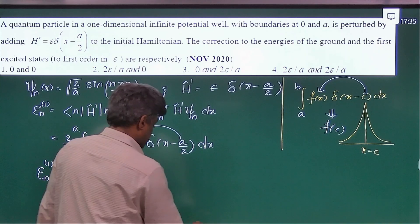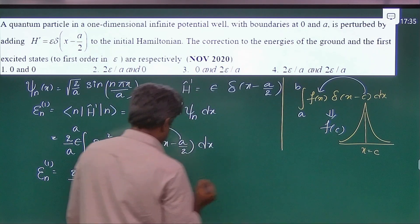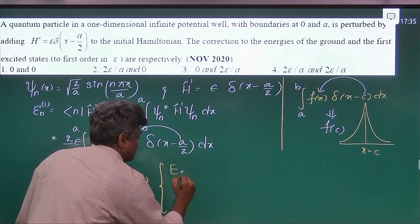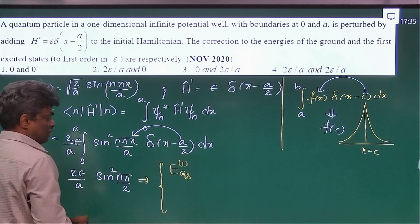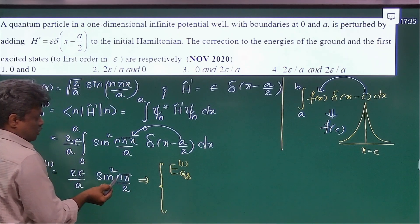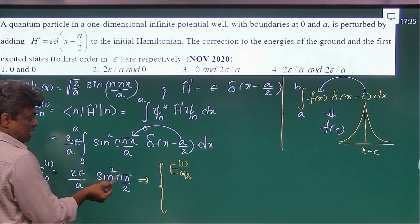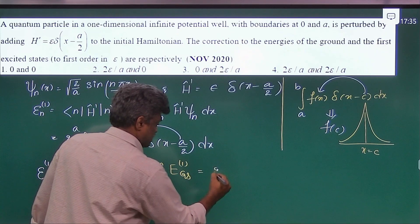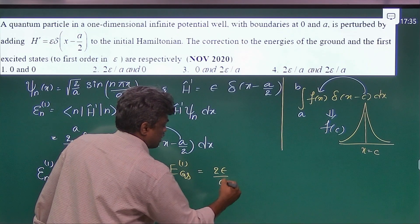Now they are asking for ground and first excited state. So if you want to find for ground state, just put n equal to 1. If you substitute n equal to 1, this is sin square pi by 2, which is equal to 1. So here you will get 2 epsilon by a.